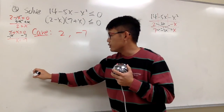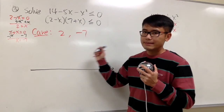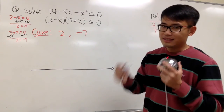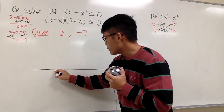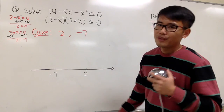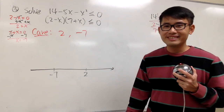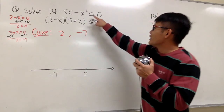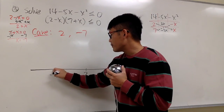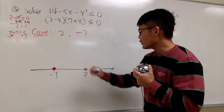Let's go ahead and draw our number line, and be sure we put the smaller number toward the left. Negative 7 is smaller, so let me mark it right here — negative 7 — and for 2, let me put it down here. Do we want to include these numbers? Yes, we do, because we have the equal sign originally. So at negative 7 I'm going to use a closed circle, and likewise for 2, we also want to include it.